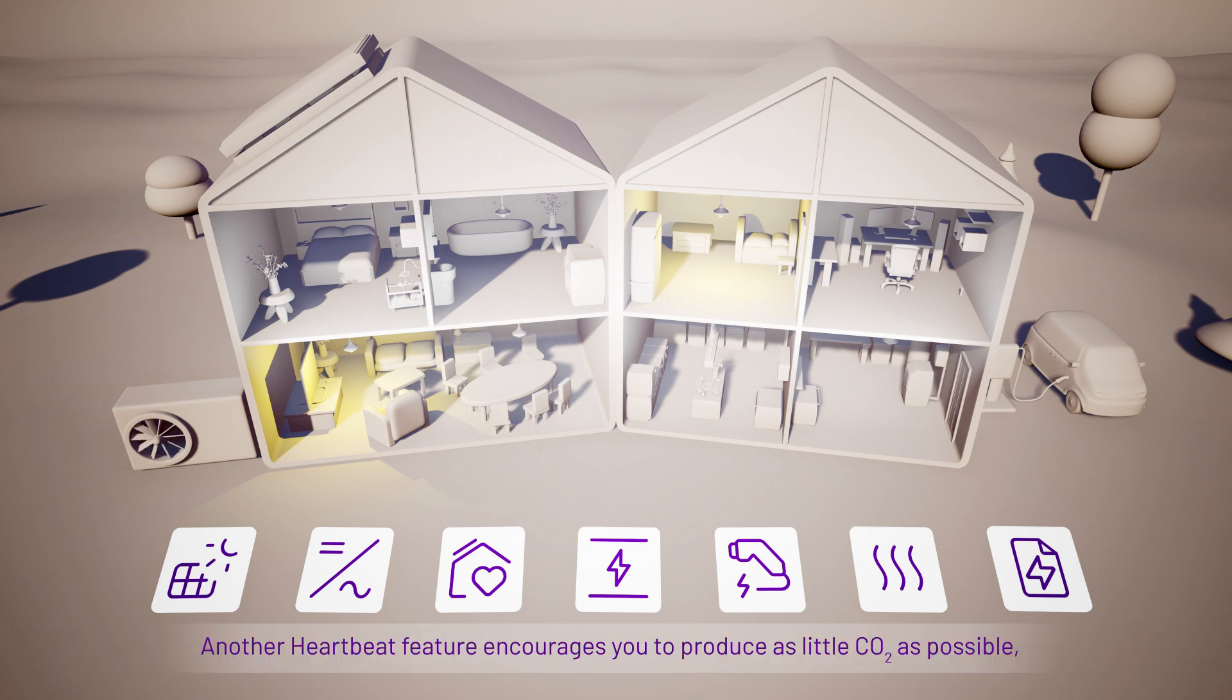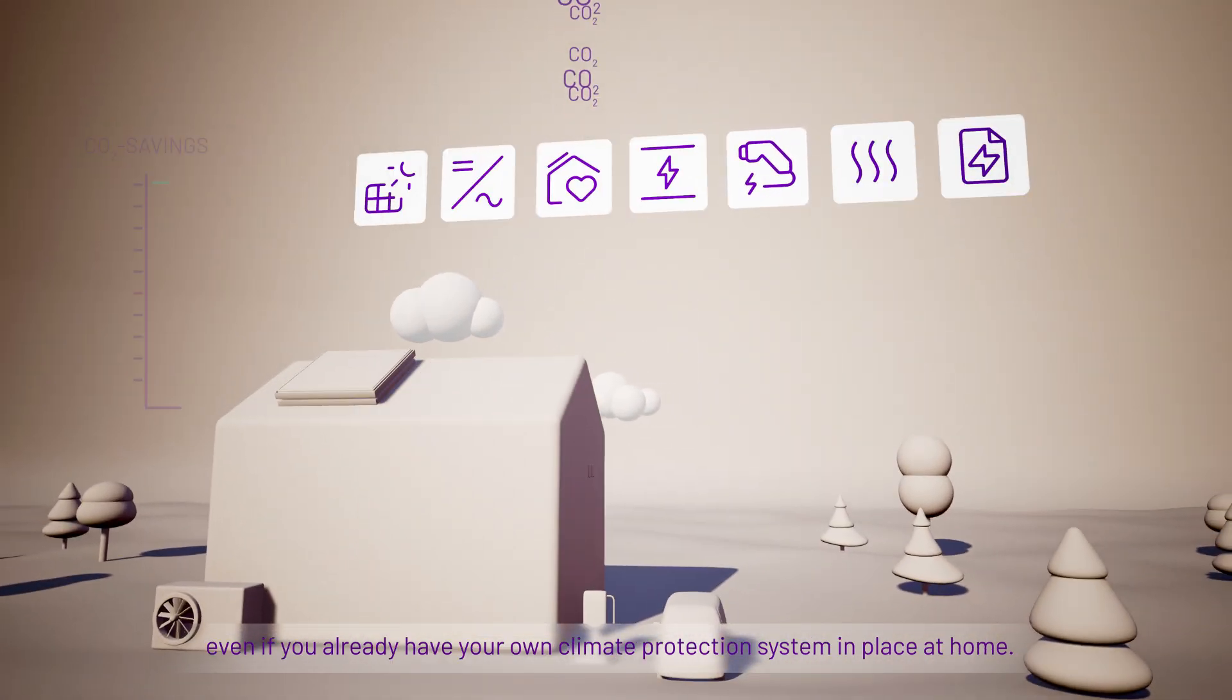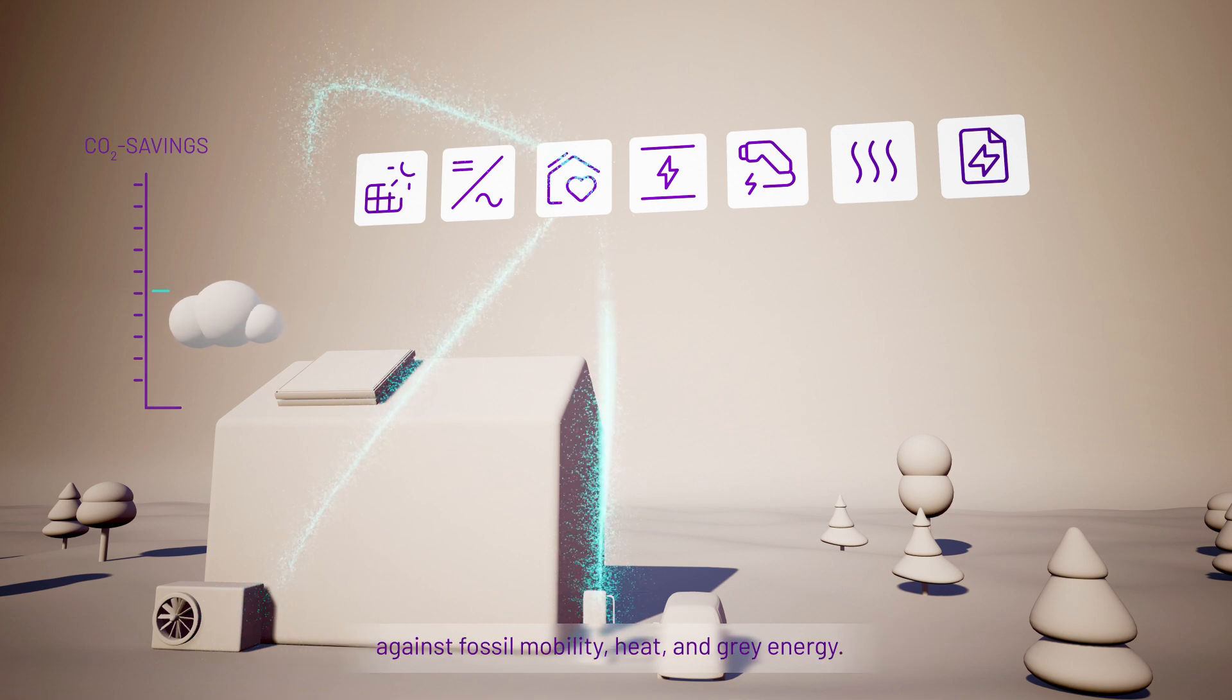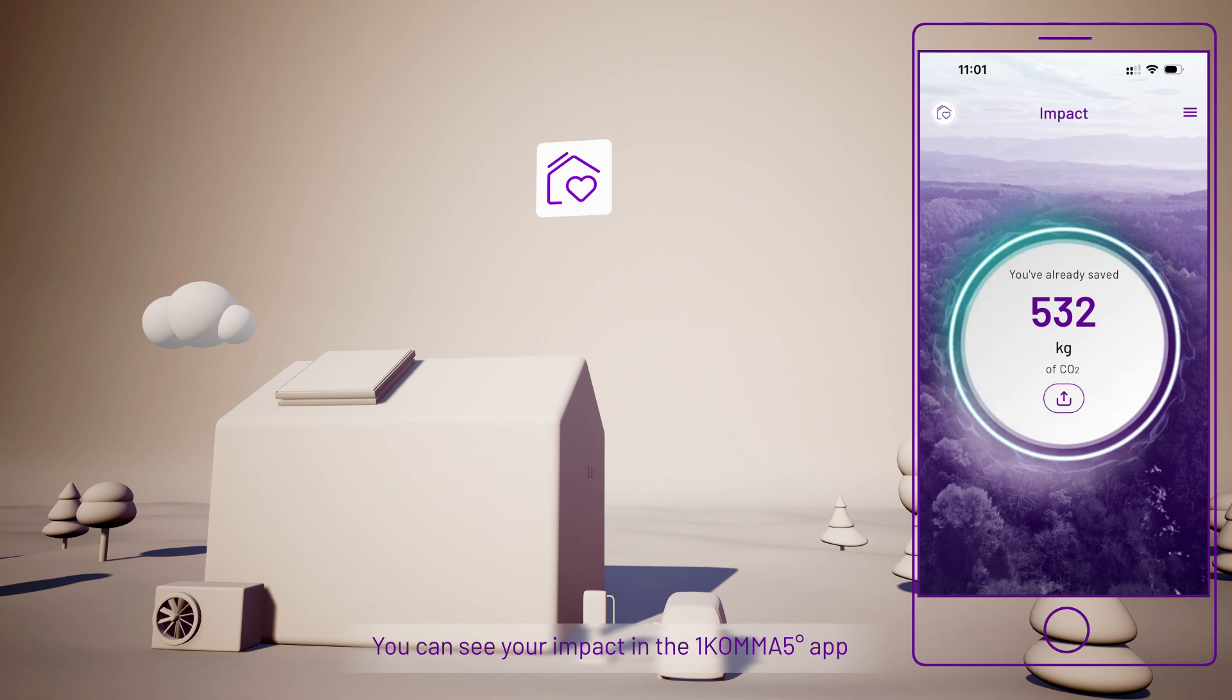Another HeartBeat feature encourages you to produce as little CO2 as possible, even if you already have your own climate protection system in place at home. HeartBeat tracks your personal CO2 reductions in real-time against fossil mobility, heat and grey energy. You can see your impact in the 1.5 app and share it with friends and family.